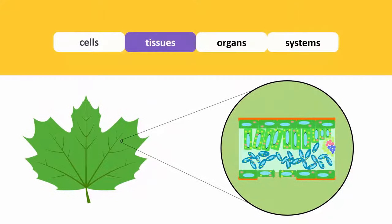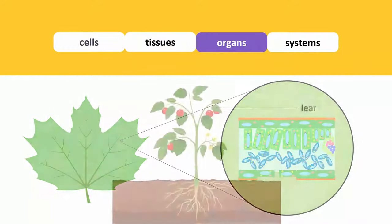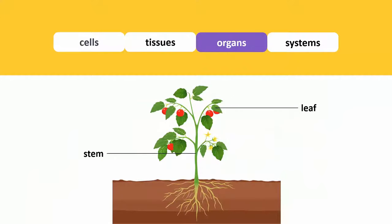In plants, just like in animals, many different tissues come together to form an organ. The leaf, stem, root, flower.